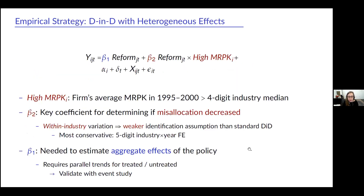Our key empirical strategy is a difference-in-differences with heterogeneous effects. Essentially what we do is look at the effect of being a firm in an industry that gets reform, allowing that to depend on the firm's pre-treatment marginal revenue product of capital. So firms that ex ante had high marginal revenue products of capital — if misallocation goes down, we expect their MRPK to differentially fall, and we expect their capital to differentially go up. We control for full firm and year fixed effects.